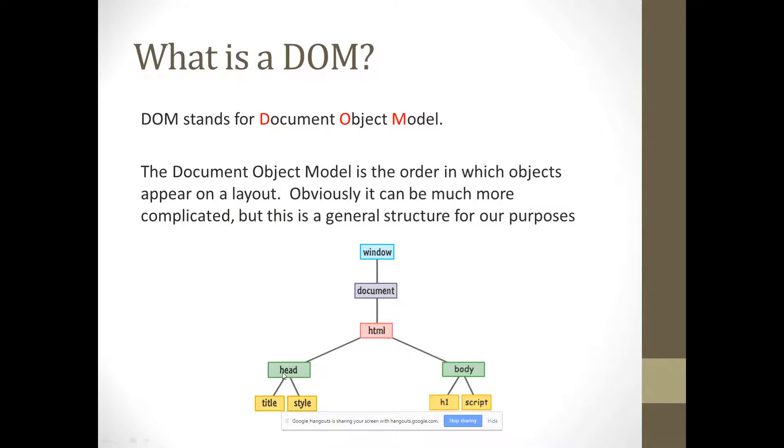Document Object Model is the order in which objects appear on a layout. Obviously, it can be much more complicated, but it's the general structure for our purposes. We can have like a head, a body, there could be multiple divs. I just went with a very simple simple little setup here, just to make it easier. And we can change the way that these things are arranged. We can add parts to it and things like that. So, we're going to cover a bit about that.